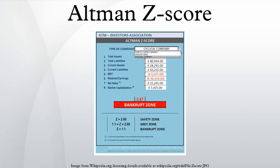The Z-score uses multiple corporate income and balance sheet values to measure the financial health of a company. The Z-score is a linear combination of four or five common business ratios, weighted by coefficients. The coefficients were estimated by identifying a set of firms which had declared bankruptcy and then collecting a matched sample of firms which had survived, with matching by industry and approximate size. Altman applied the statistical method of discriminant analysis to a dataset of publicly held manufacturers.